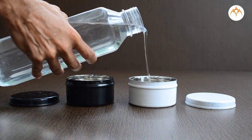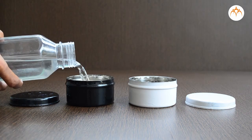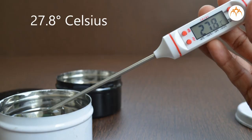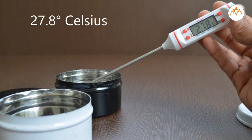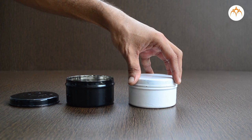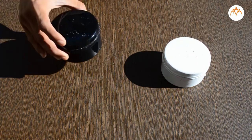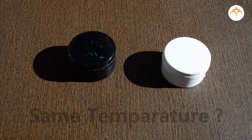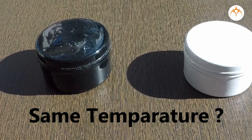Let us pour water in these two containers. Its initial temperature is 27.8 degrees Celsius. One is painted black and the other one is white. If I place both the containers in the sunlight for equal time, will the water inside both the containers have the same temperature?